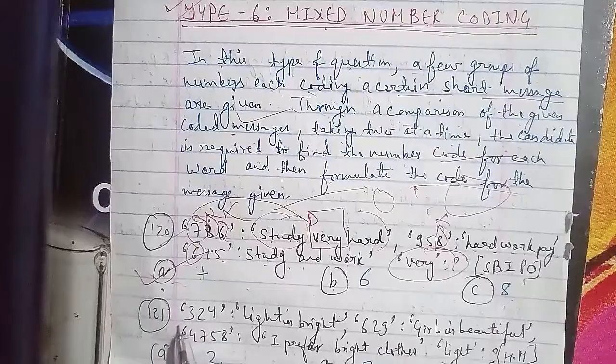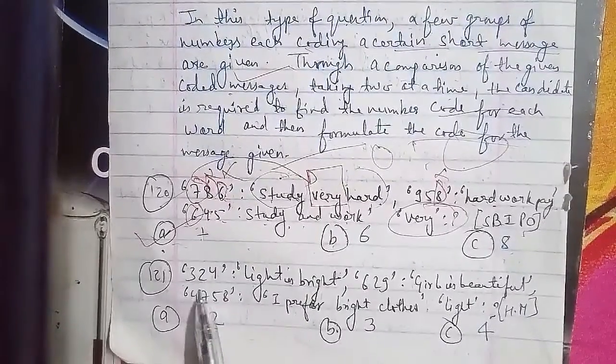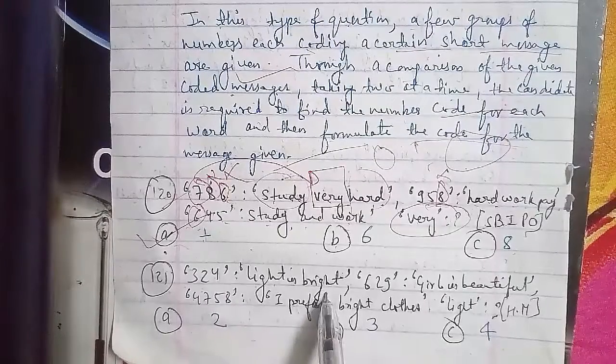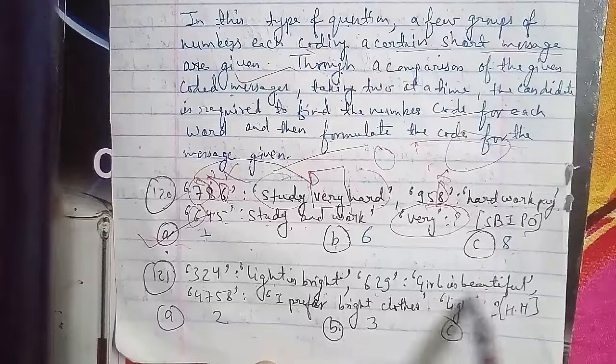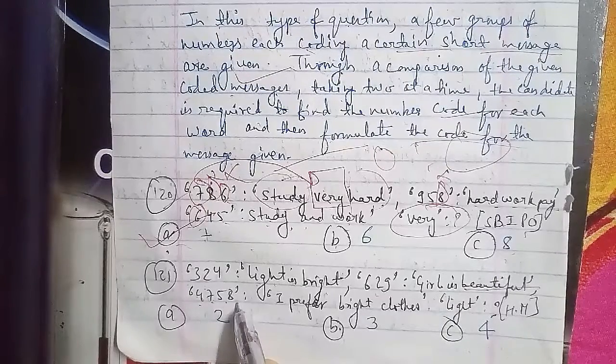You have to find the code for light. This is asked in hotel management questions. The options are A is 2, B is 3, and C is 4. So you have to find the light one code.